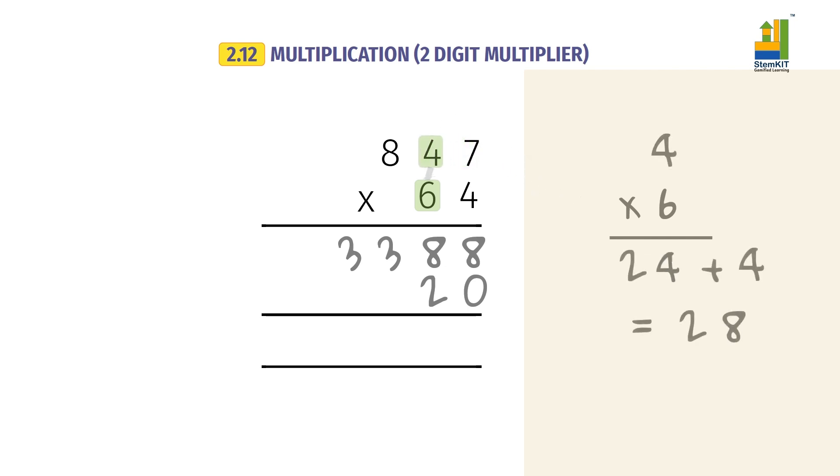Next, 4 into 6 equals 24. Add carry over 4 from previous multiplication. We get 28. Write 8.